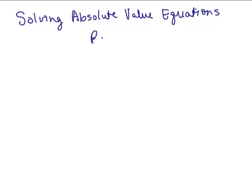This is part four of solving absolute value equations, and we're just going to work on some more examples. Let's say we had the absolute value of 6 plus 2n, minus 5, equals negative 1.